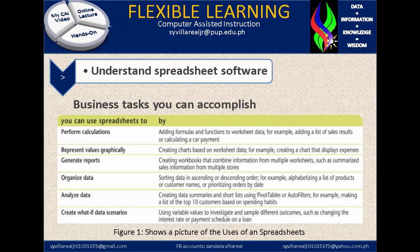Next, generate reports — creating workbooks that combine information from multiple worksheets, such as summary sales information from multiple stores. Next, organize data by sorting data in ascending or descending order. For example, alphabetizing a list of products or customer names.